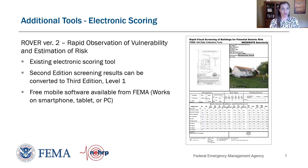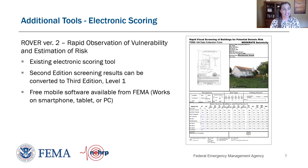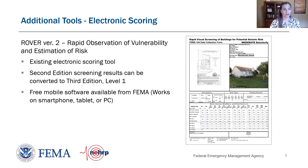One tool is Rover — Rapid Observation of Vulnerability and Estimation of Risk. Rover was developed to implement the second edition of FEMA P-154 and is also used for rapid evaluations post-earthquake according to ATC-20 methodology. It can be downloaded onto a computer or tablet, and there are ways to make it work on a smartphone. It's a great way to record information in the field directly into electronics, which then gets passed into a database. The output includes a form with a photo of the building being evaluated and a map of the property.